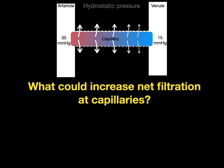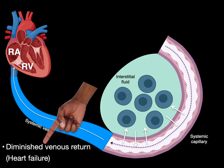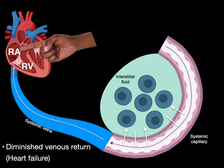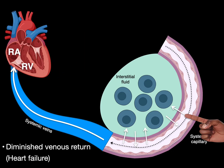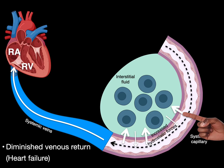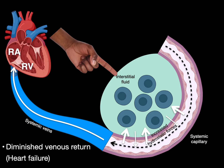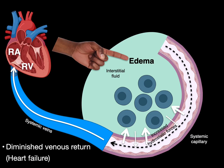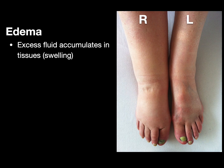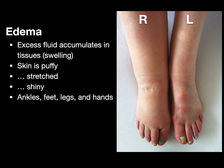What could increase net filtration at the capillaries? One cause is increased back pressure at the venous end. With diminished venous return — like right-sided heart failure — fluid and pressure build up in the right ventricle, right atrium, and systemic veins, causing systemic capillaries to increase hydrostatic pressure, which increases fluid movement into the interstitium. That's edema — excess fluid accumulating in the tissues causing swelling, with puffy, stretched, shiny skin, often in the ankles, feet, legs, and hands.